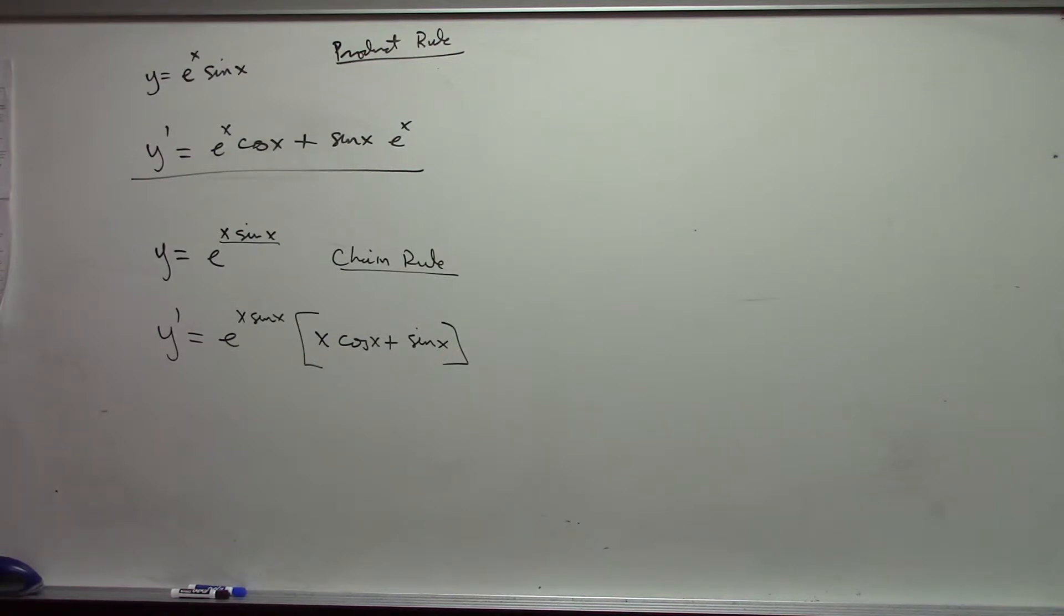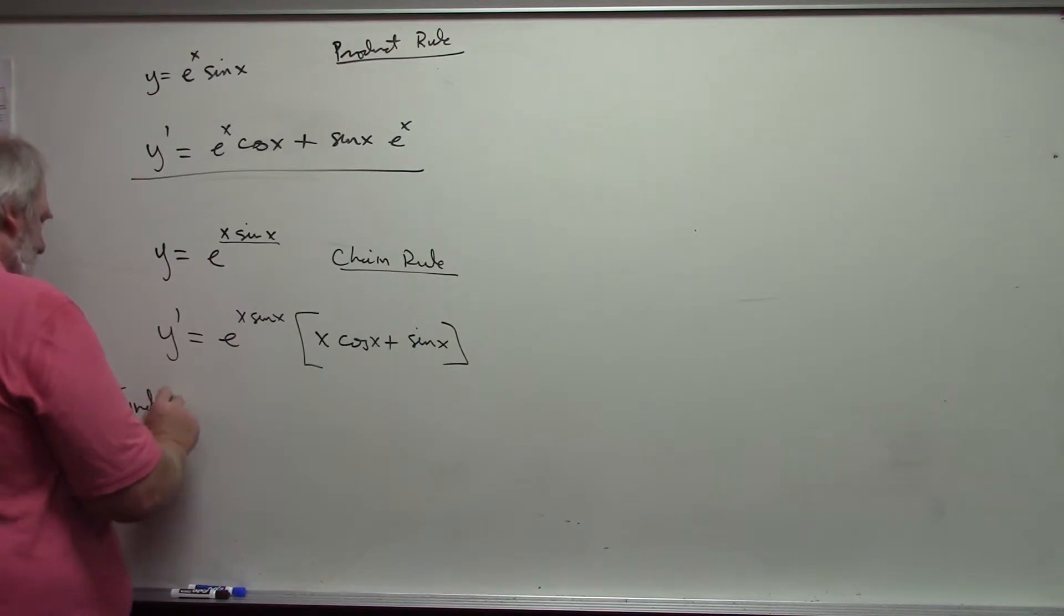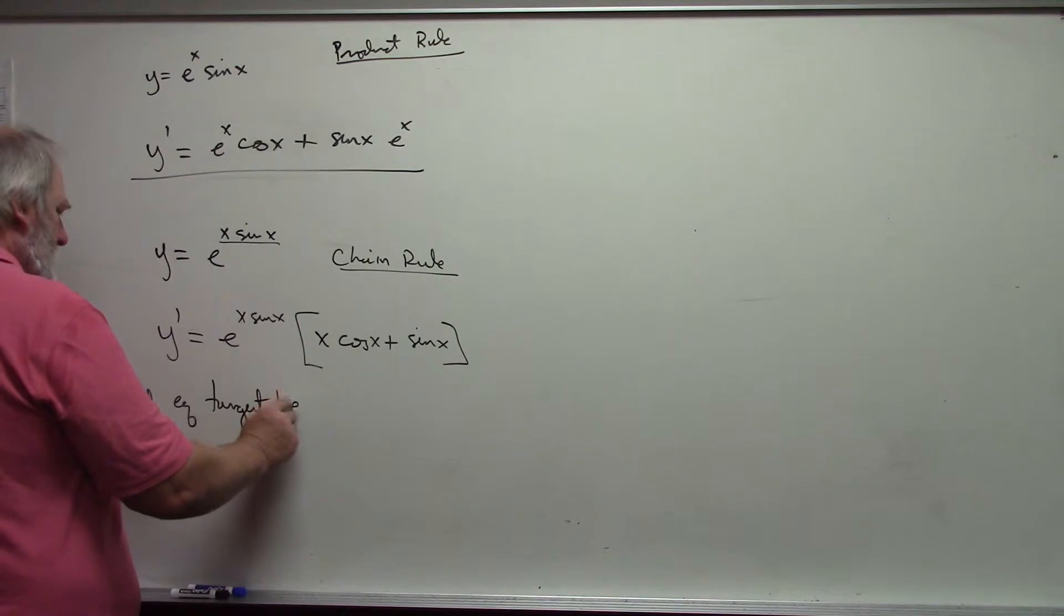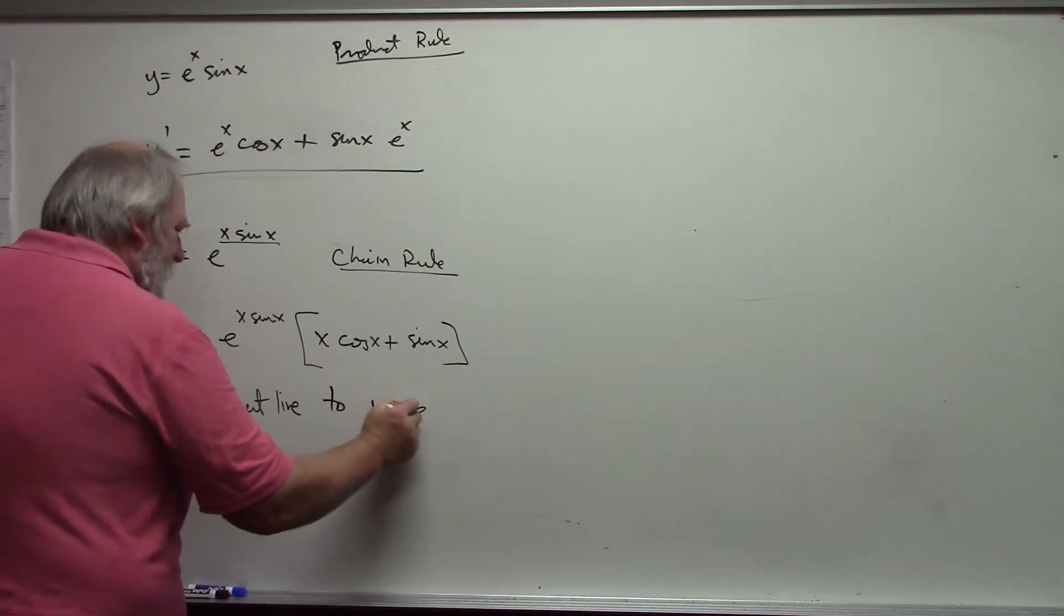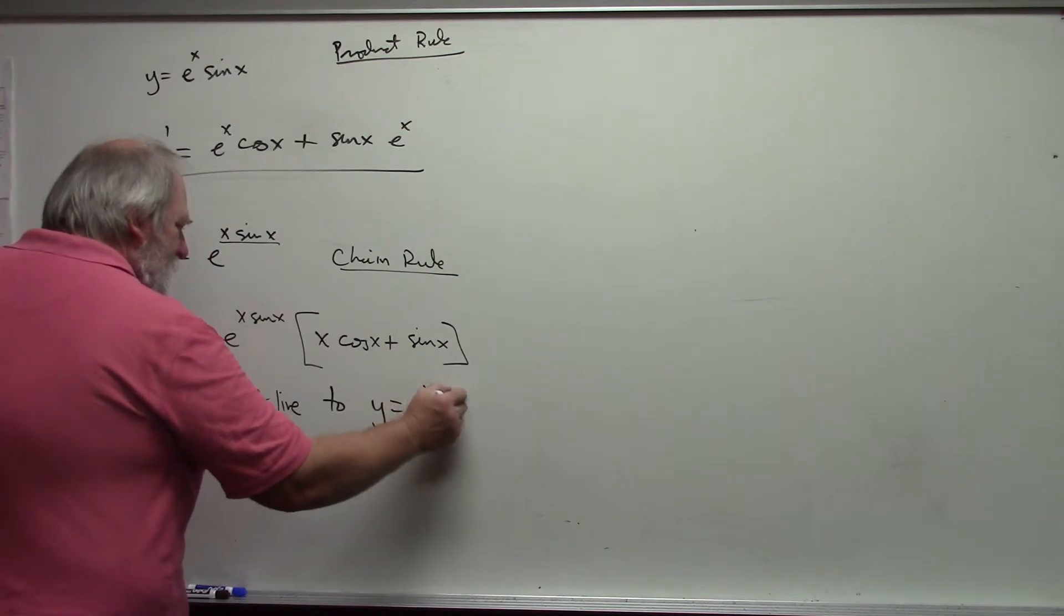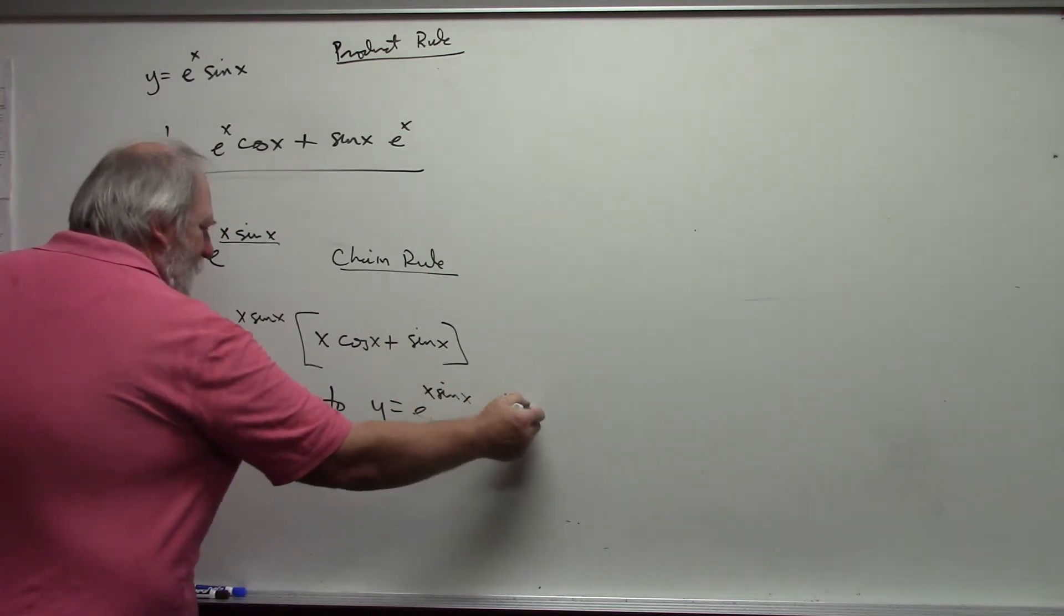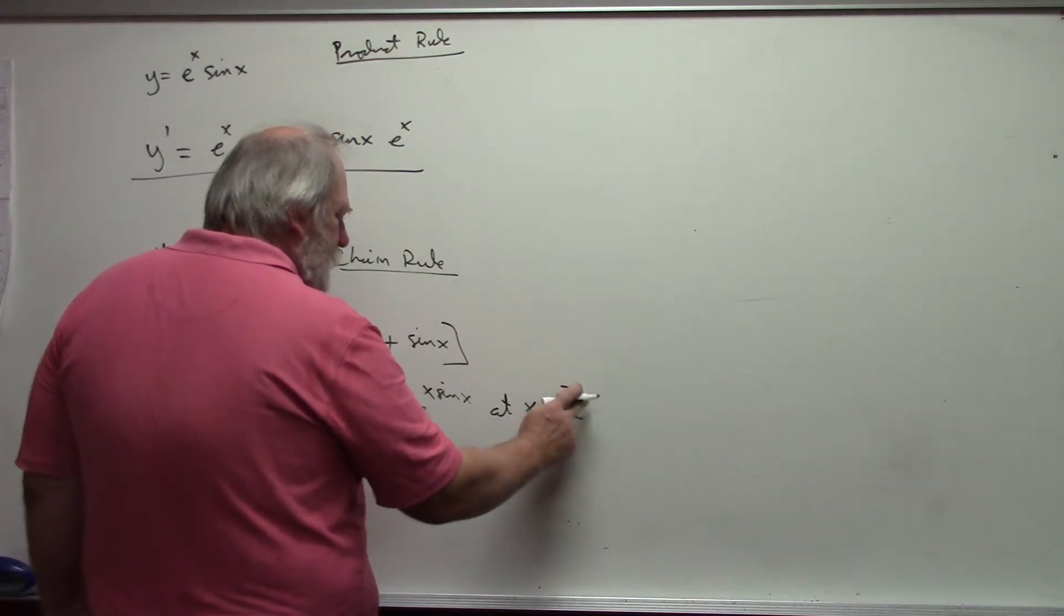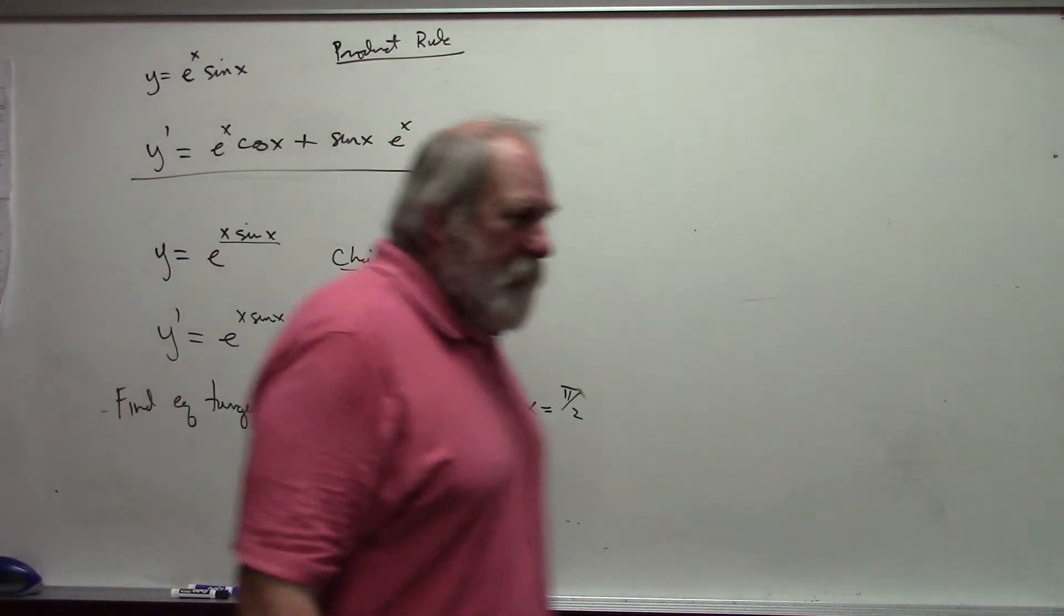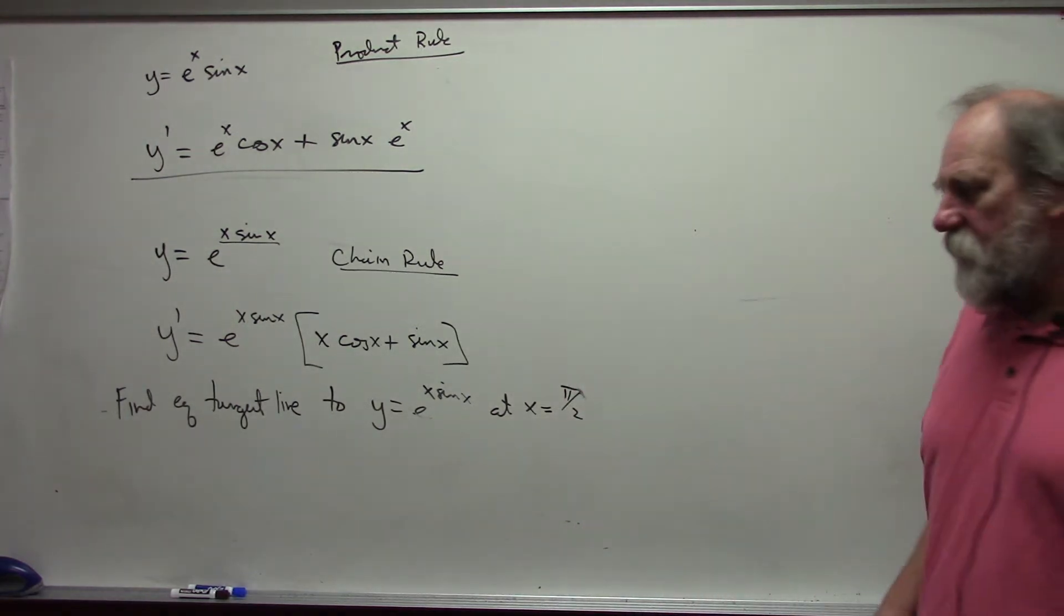Let's suppose that I want the equation of the tangent line to y is equal to e to the x sine x at x equal pi over 2. Well, for an equation of a tangent line, we need two things.